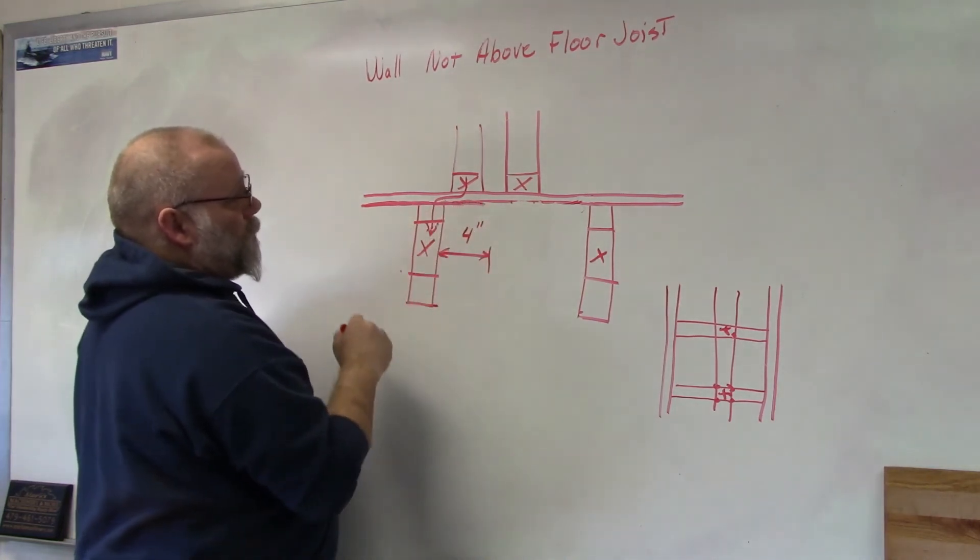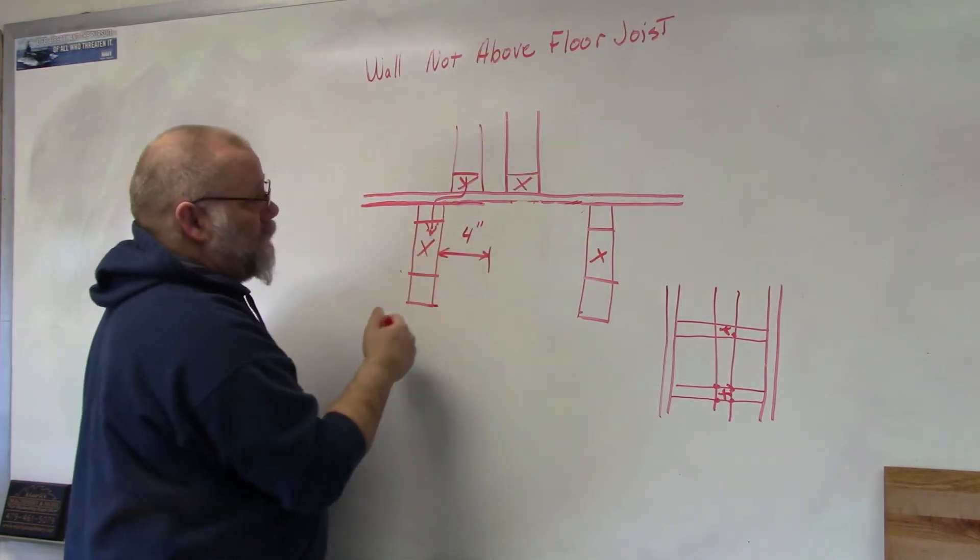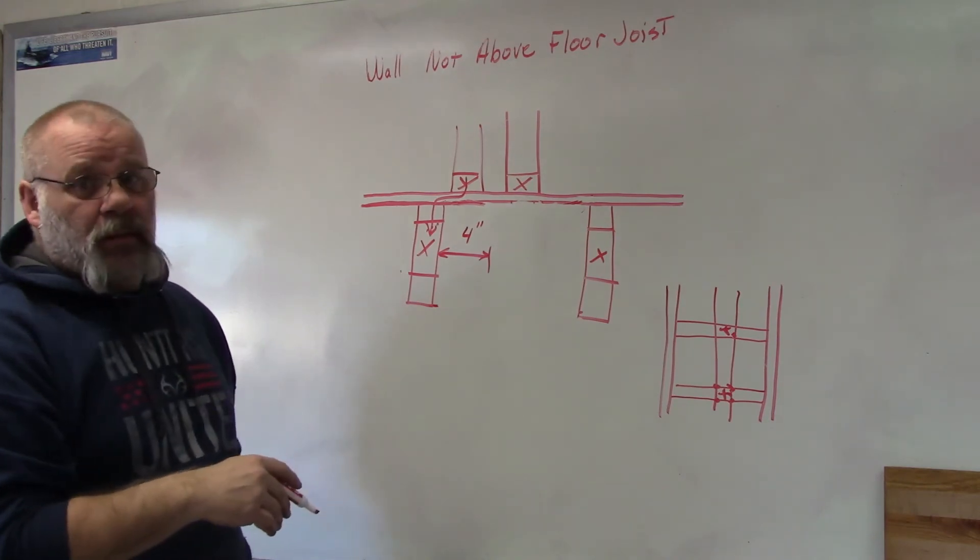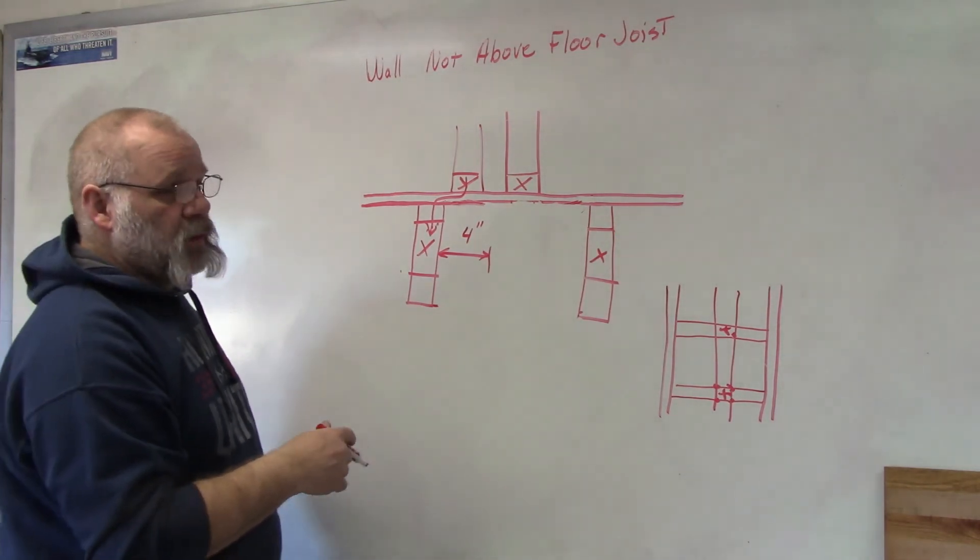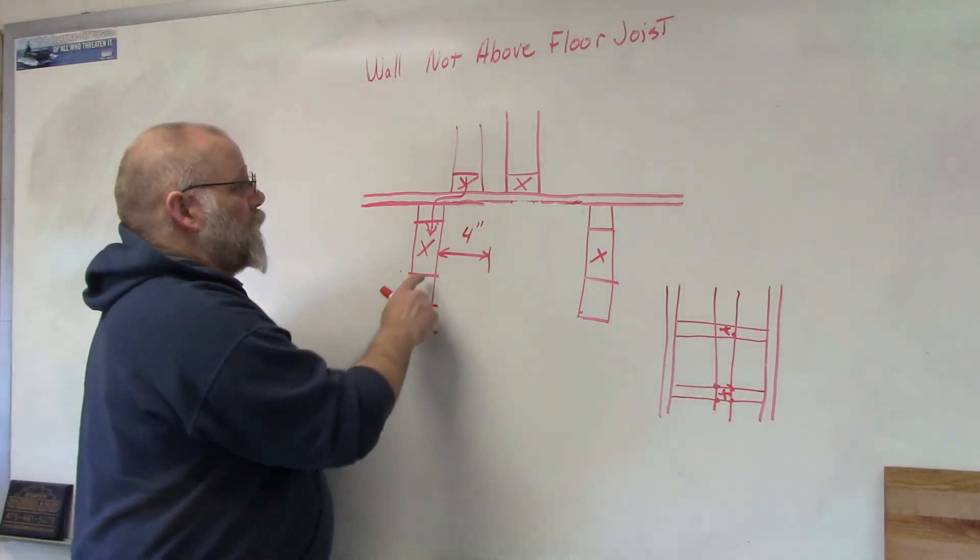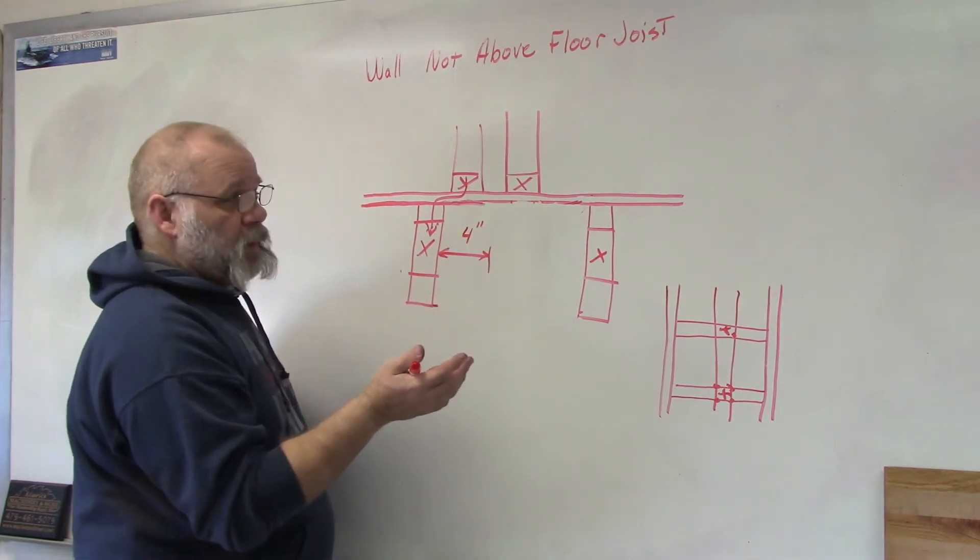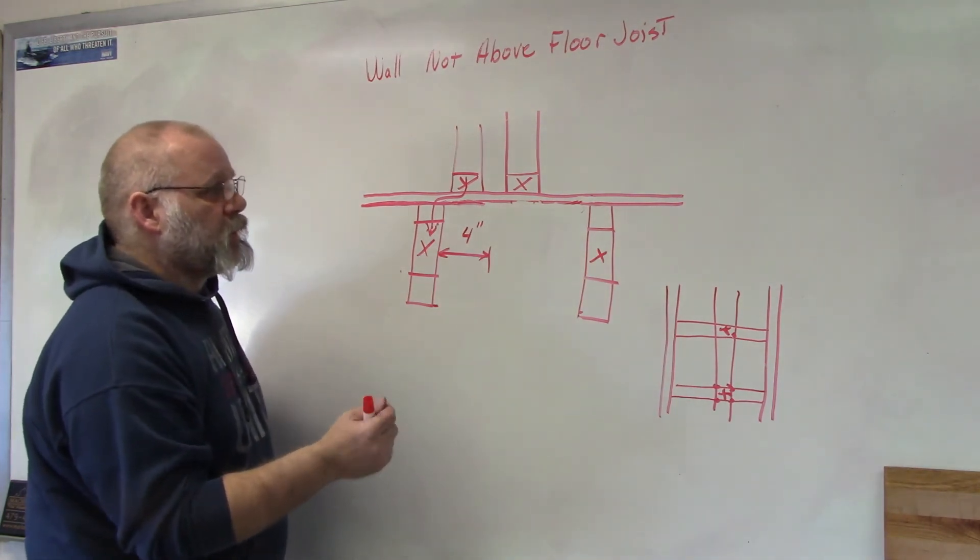It might sag a little bit but all houses sag to some degree because that's just the way they do. They settle over time and they sag. So you're going to expect a little bit over time in any house, no matter how well built it is. It's going to settle over time. Just gravity has that effect on it.